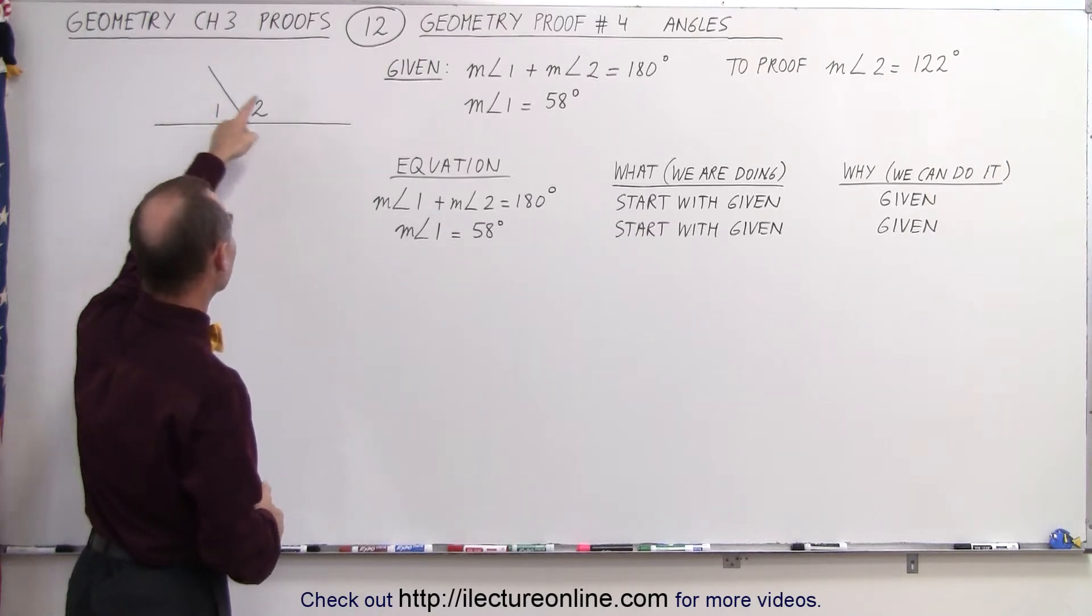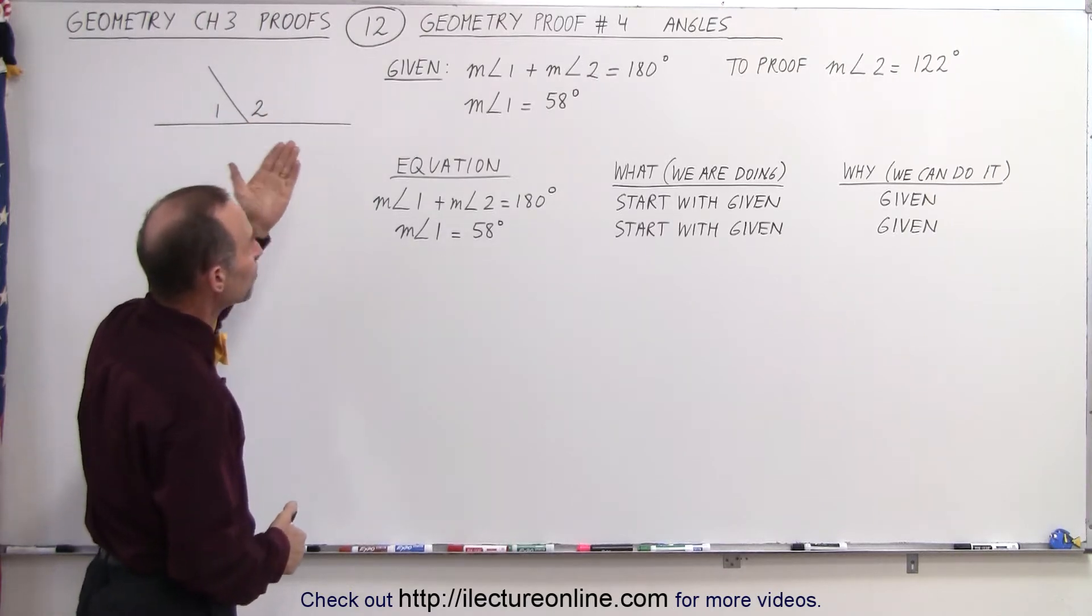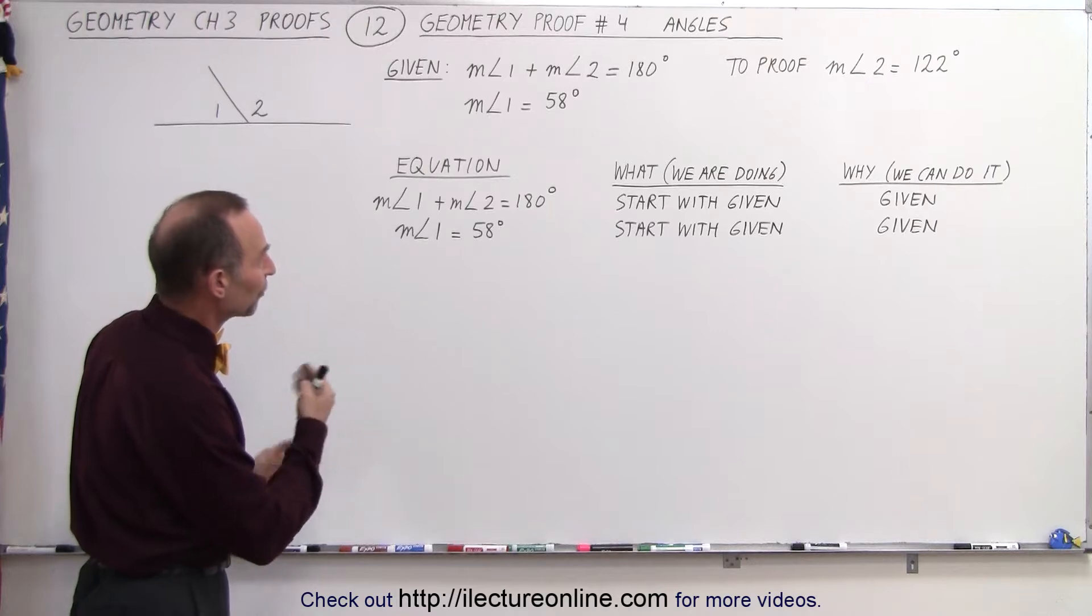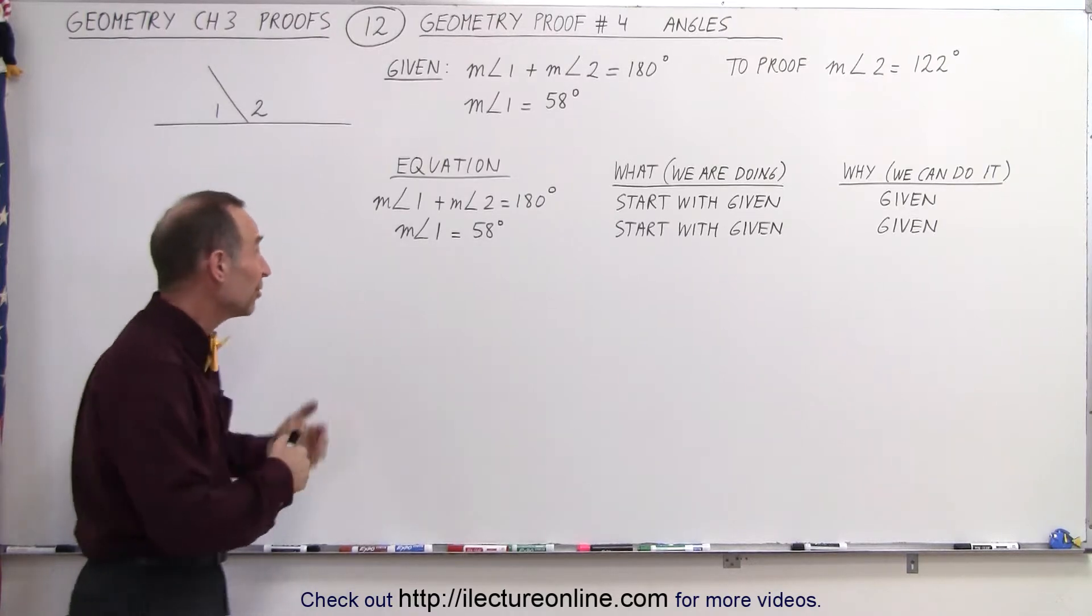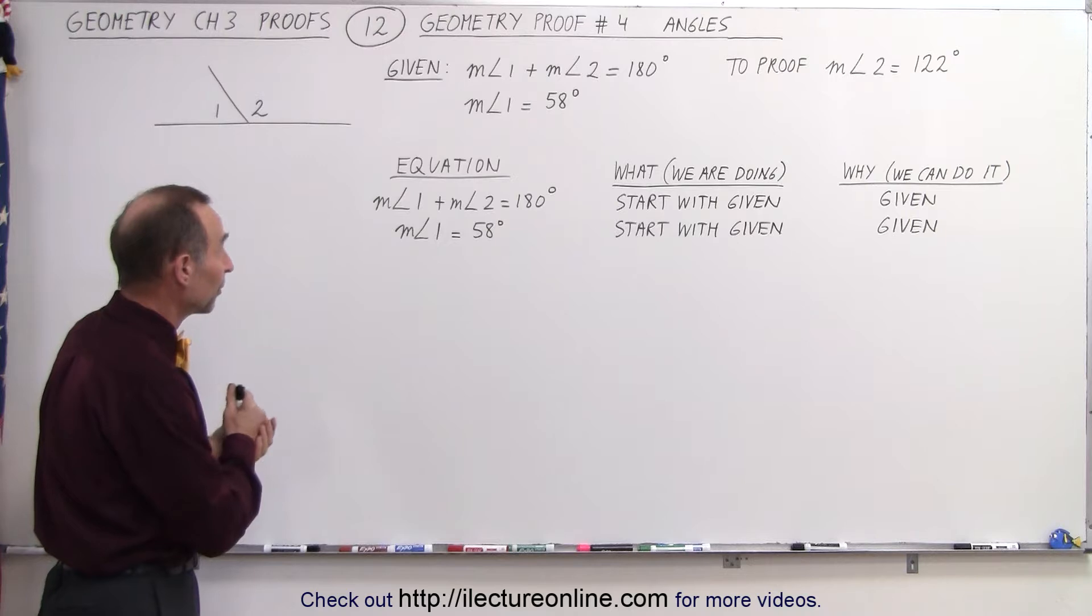Here we have two angles, angle 1 and angle 2. We're given that the measure of angle 1 plus the measure of angle 2 equals 180 degrees, which means that those two angles are supplementary.